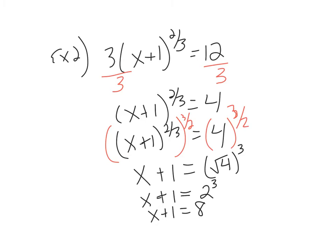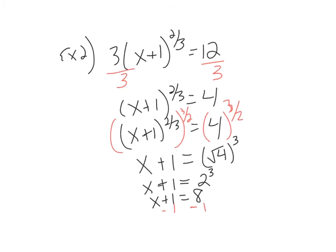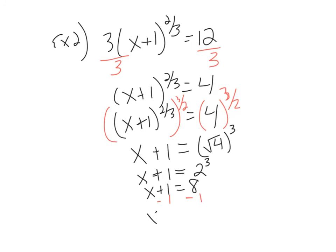So now we just have to solve for x. So how do we isolate the x? We isolate the x by subtracting 1. Therefore, x equals, let's make it smaller, x equals 7. But before we box it, what must we always, always do?